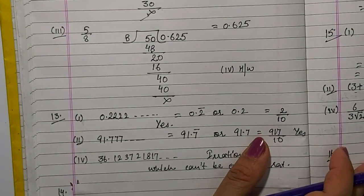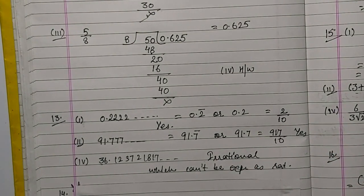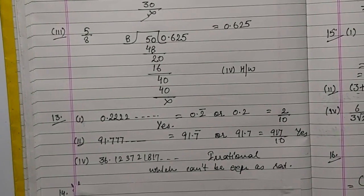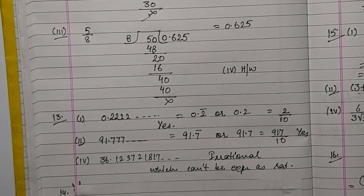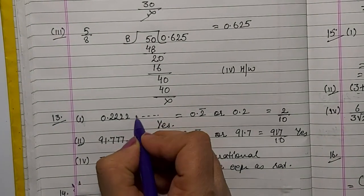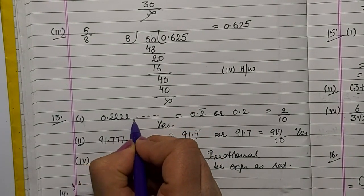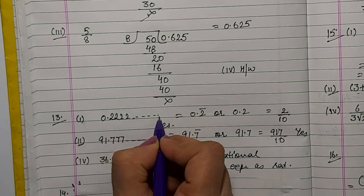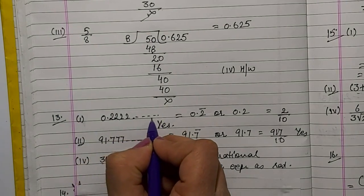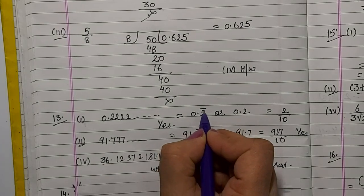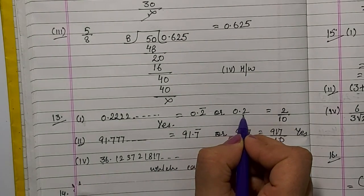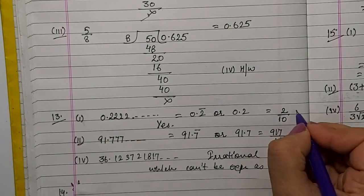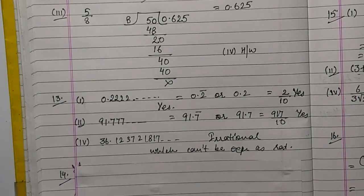13th question: find out whether these numbers can be expressed as rational numbers or not. Rational numbers are numbers which can be expressed in the form p by q where the denominator is not equal to 0. For recurring, non-terminating decimals, we write 0.2 bar. This is 0.2 bar, or we can write 0.2 itself. 0.2 can be expressed as 2 by 10, so yes, this is a rational number.